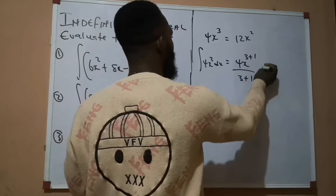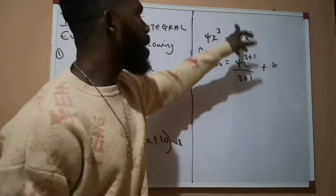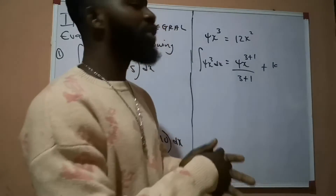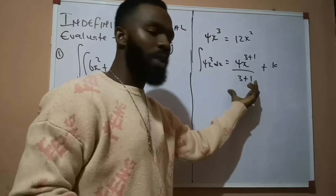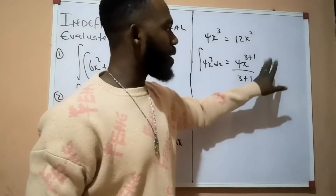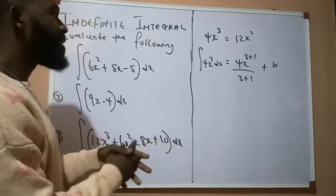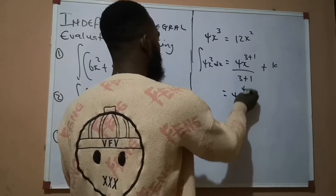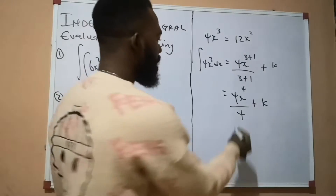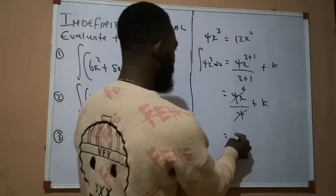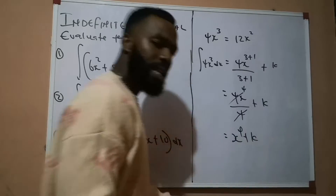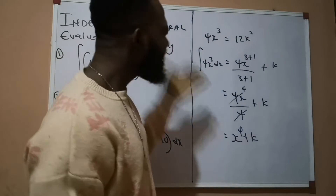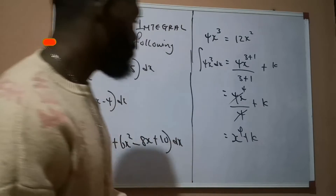Here in differentiation we subtract 1 and multiply, but in integration we only add 1 to the power, and what we have in the new power becomes the denominator, plus k. The plus k is because this is an indefinite integral. So the answer becomes 4x raised to the power 4 over 4 plus k, and since 4 cancels 4, our final answer is x raised to the power 4 plus k. So: differentiate 4x³ and you get 12x²; integrate 4x³ and you get x⁴ plus k.